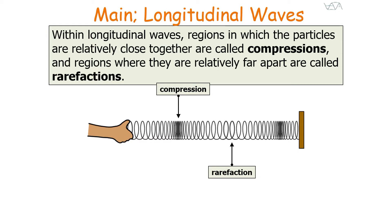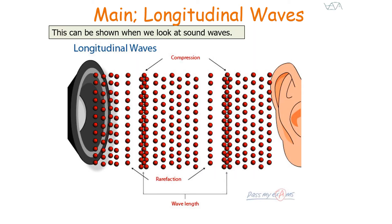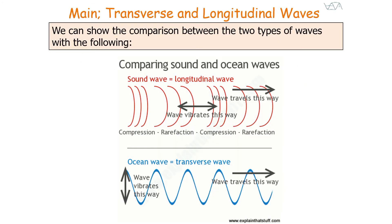Within longitudinal waves, regions where particles are relatively close together are called compressions, and regions where they are relatively far apart are called rarefactions. Looking at sound waves as an example, a wavelength in a longitudinal wave is measured from one compression to the next, or from one rarefaction to the next. This shows the comparison between the two types: sound waves are longitudinal with compressions and rarefactions, whilst ocean or water waves are transverse.